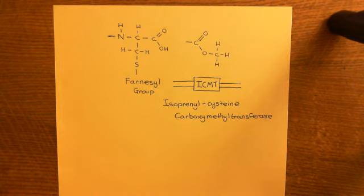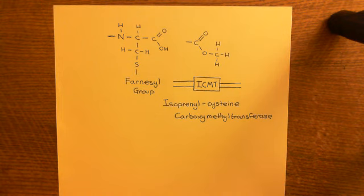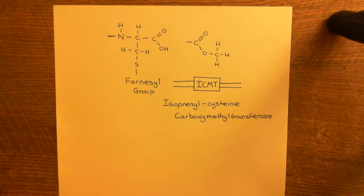In the next video we'll turn our attention to how the RAS proteins move from the endoplasmic reticular membrane — now that they have been farnesylated and had their post-prenylation modifications done — to other membrane sites within the cell such as the plasma membrane. This is going to involve further lipid modifications, including palmitoylation in most cases.